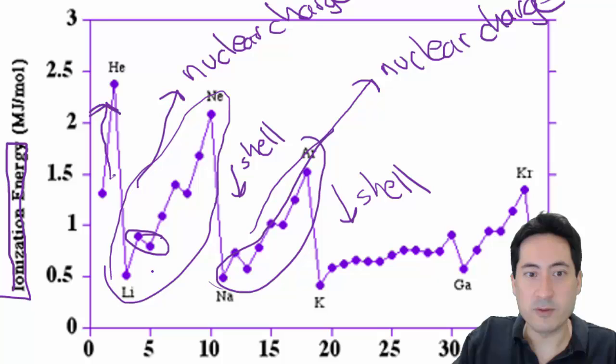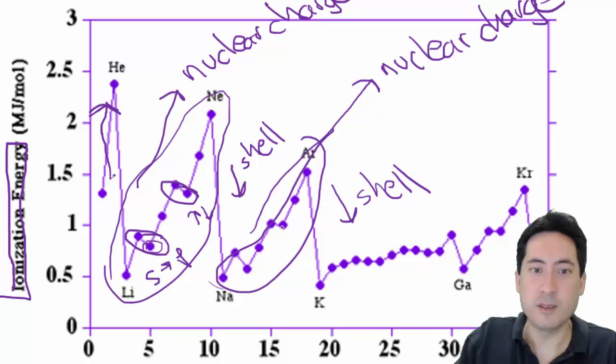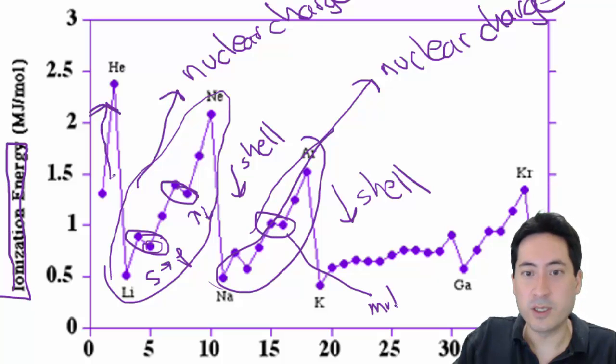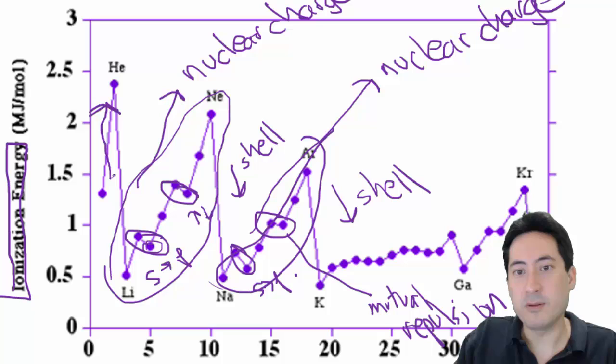And now the only other differences in these trends are these small jumps here. And this is going from an S to a P shell. So you're removing the P electron here is a better thing. And here, this one is the P123. So this is the mutual repulsion one here. So again here, this one here is the mutual repulsion again. And this one here is the S to the P. So make sure you fully understand all those little quirks of these graphs.